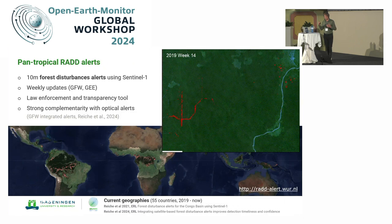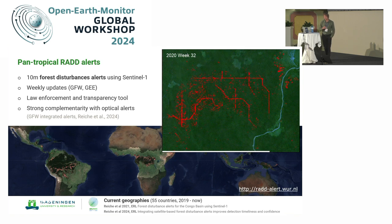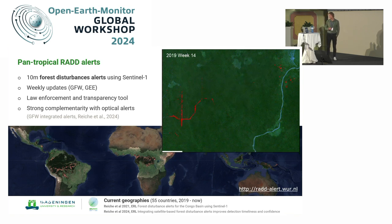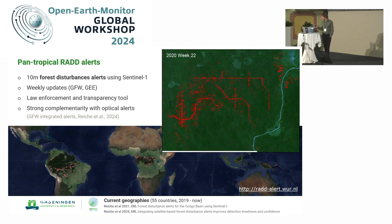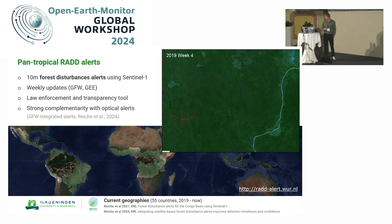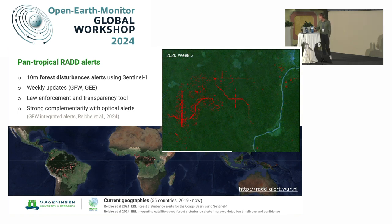We have automated and operationalized that work. The RADD Alerts is a Sentinel-1-based operational forest disturbance alert for the pan-tropics. We provide weekly updates distributed via Global Forest Watch, and the data is also available in Earth Engine and other platforms — the Borneo Atlas Initiative Indonesia uses it, among others. The aim is really to support law enforcement and transparency.